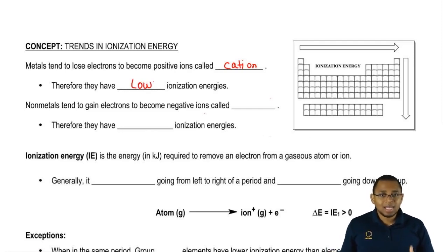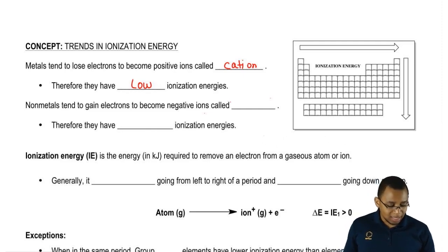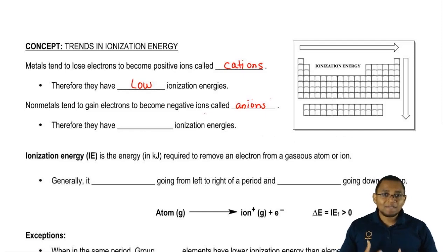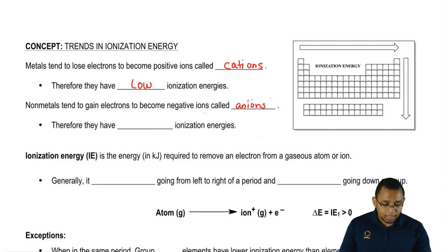Non-metals, on the other hand, love to gain electrons to become negative ions called anions. Ionization energy is the energy it takes to remove an electron, but if you love to gain electrons, you're going to have to fight very hard to take electrons away. As a result, non-metals have high ionization energies.